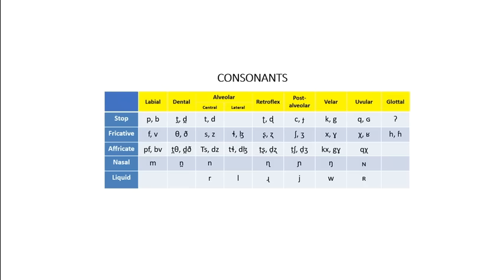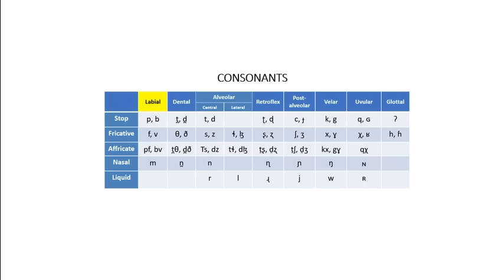In the IPA, the columns indicate where in the mouth the sound is produced, starting at the very front with both the lips, and moving back towards the glottis. The rows represent the way the sound is produced, whether it's a stop, produced by completely obstructing airflow, a fricative, produced by leaving a small gap for air to hiss or buzz through,